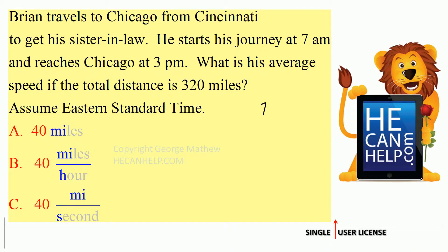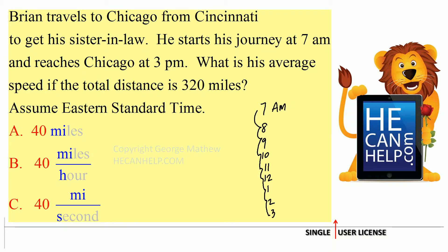So 7 a.m., he starts his journey. 7, 8 is 1, 9, 10, 11, 12, 1, 2, 3. So 1, 2, 3, 4, 5, 6, 7, 8. So we have 8 hours.